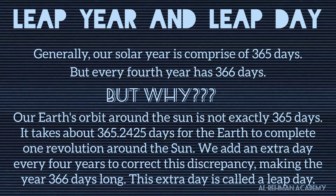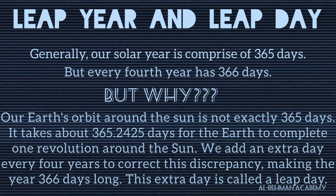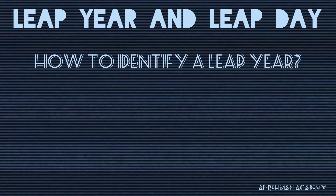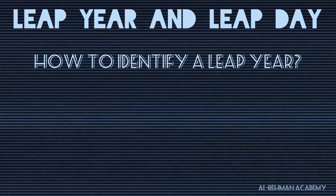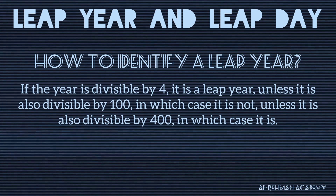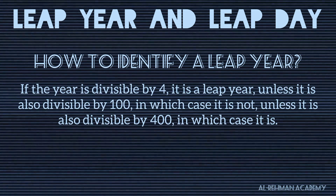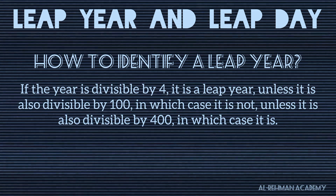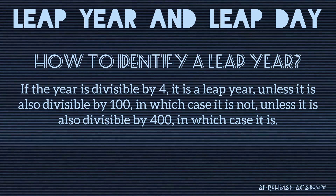The problem is ke ham mein se bohut se loog don't know how to identify the leap year. For this, we have a very simple solution: divide the year by four. Agar woh four se divisible hai, toh it's a leap year. Aur agar woh four se divisible na ho, toh it's not a leap year.